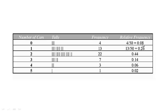So four divided by 50 is about 8%. One car would be 13, and 13 out of 50 is about 26%. Two cars is 22.